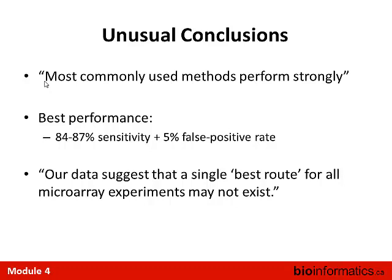The conclusions from this study are interesting. They claim that most commonly used methods perform strongly and that there is no single best way to analyze Affymetrix microarray data. But their performance is not great — the best methods reach about 85% sensitivity with a 5% false positive rate. In other words, their best methods are missing 15% of differentially expressed genes.